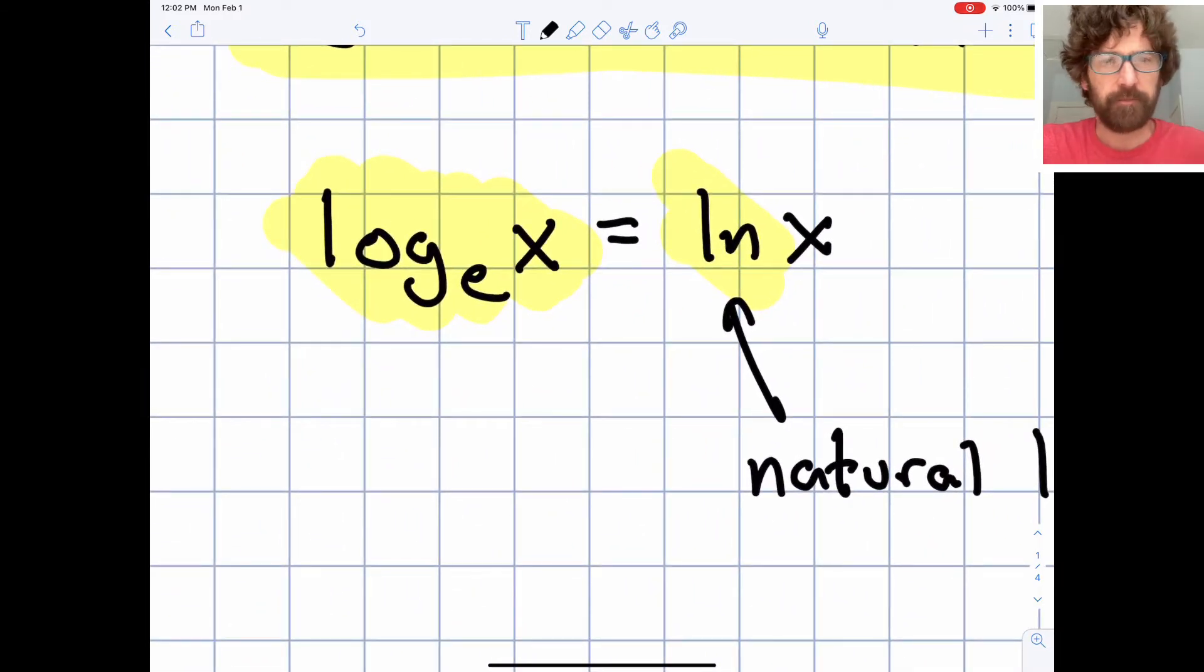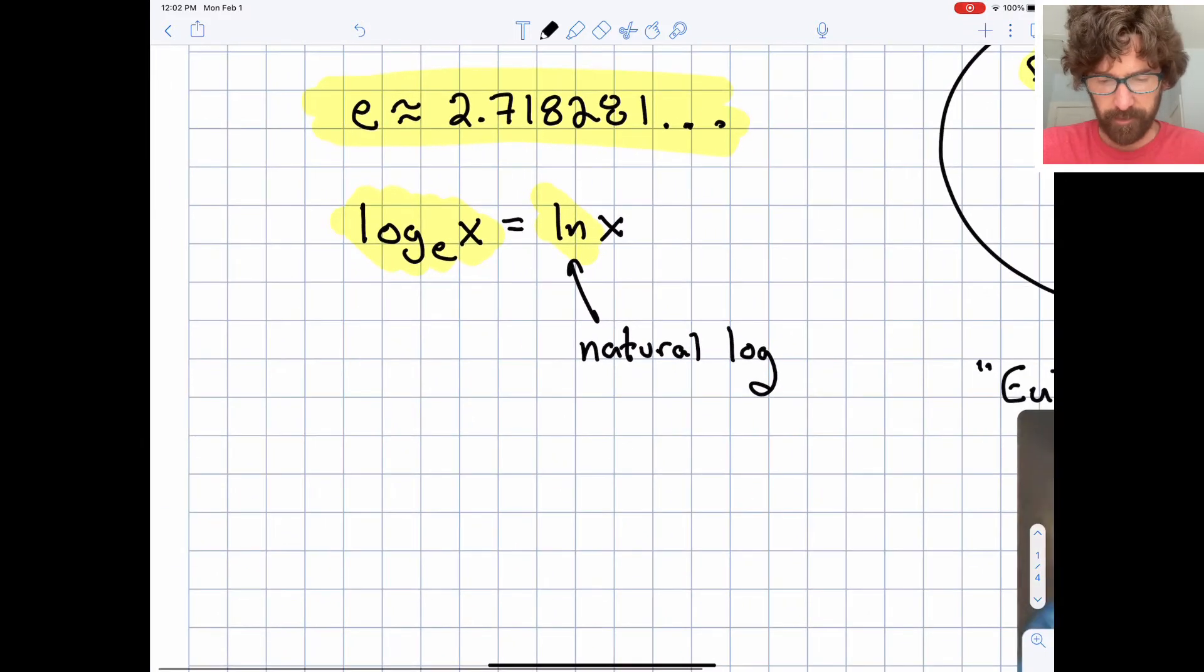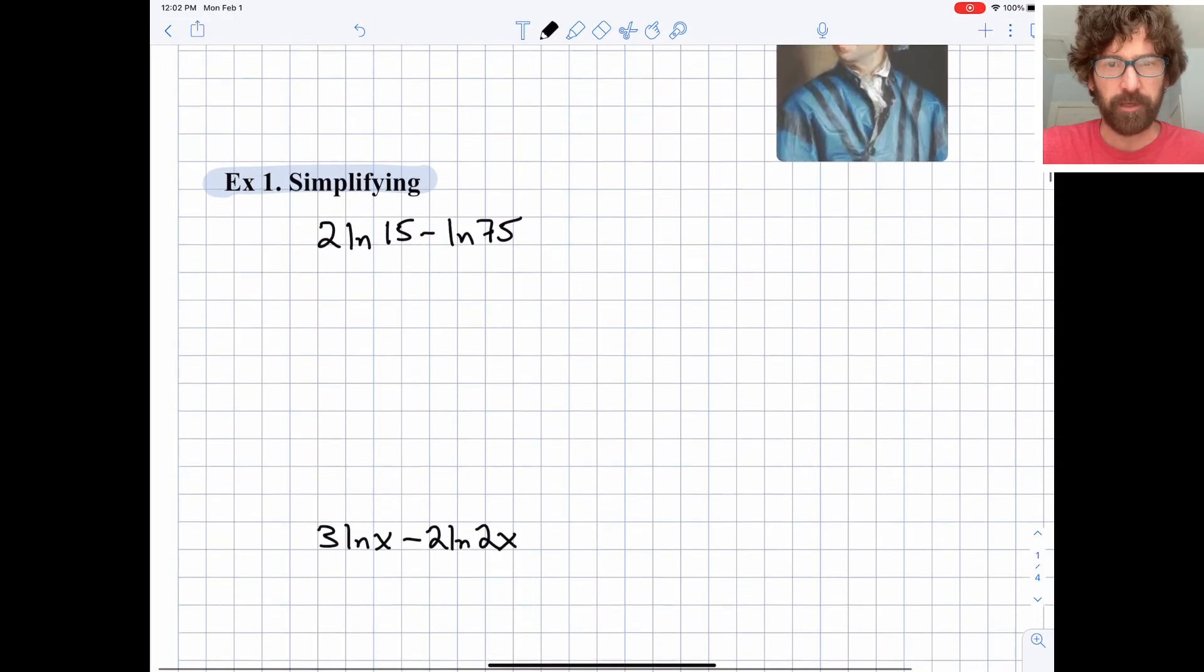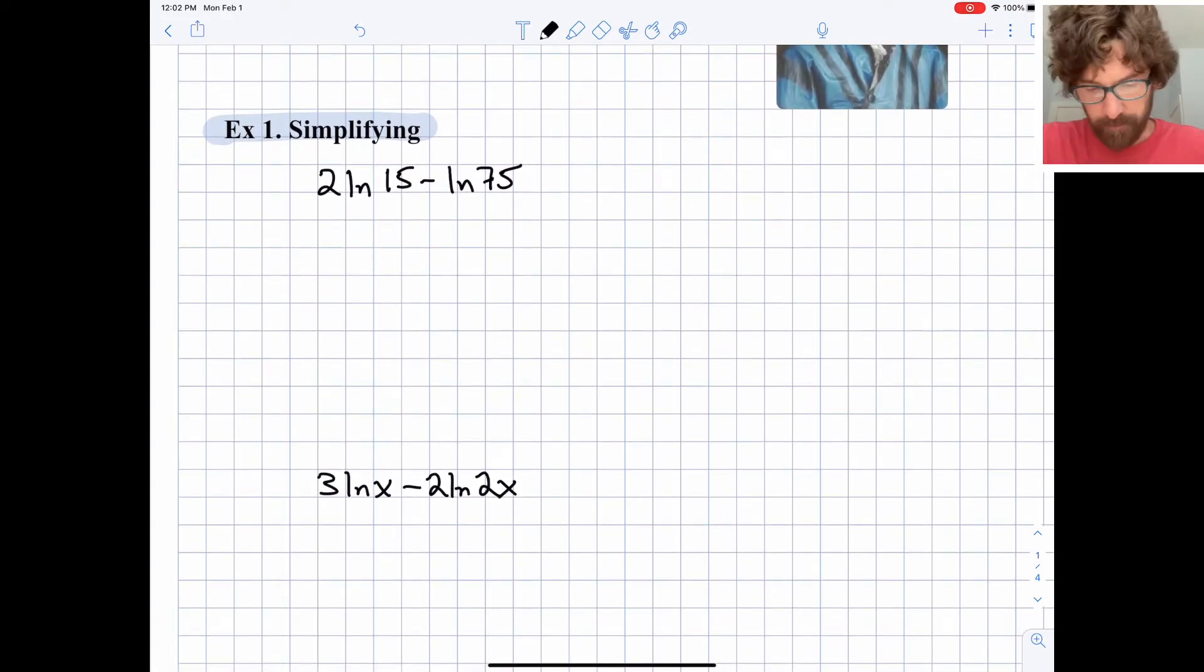And really, I just want you to remember this piece right here. The natural logarithm is simply the logarithm base e. So it's nothing more sophisticated or complicated than that. It's just a logarithm with the base of e.